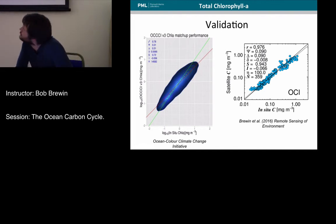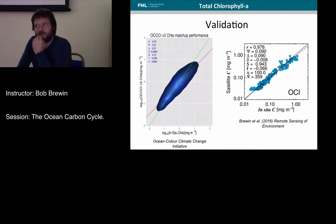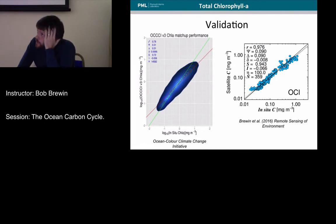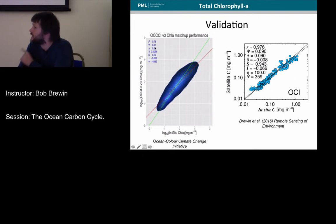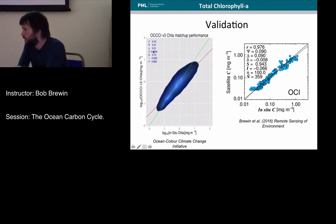In terms of user requirements, the CCI requirements talk about an accuracy of 30%. You have to be slightly careful with these errors — this is an error of 0.3, which is 30% in log space. The root mean square error assumes a normal distribution of data, which is normally distributed in log space. The answer depends on the application, but typically the user requirements talk about an accuracy of 30%.